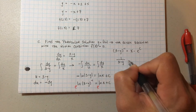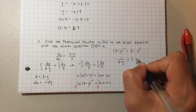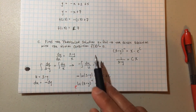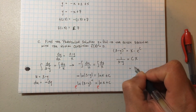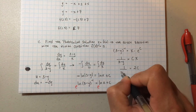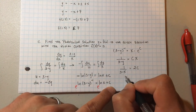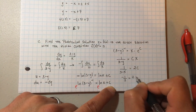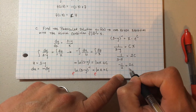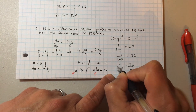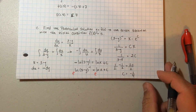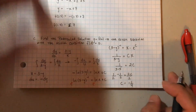So 1/(3 - y) = Cx. Now use the initial condition x = 2, y = 5: 1/(3 - 5) = 2C, so -1/2 = 2C. Dividing both sides by 2 — the same as multiplying by 1/2 — gives C = -1/4.